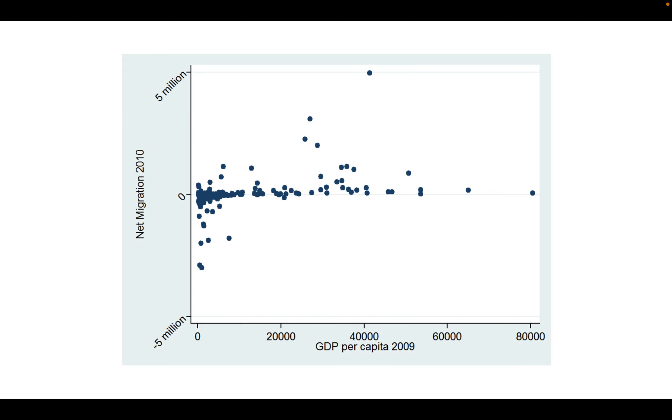So, for instance, if we had a hypothesized relationship between GDP per capita and migration into or out of a country, and we have these plotted for various countries around the world, we can see that there's variation in GDP per capita in countries around the world, from almost no GDP per capita or very poor countries, to very wealthy countries out about $80,000 in GDP per capita.